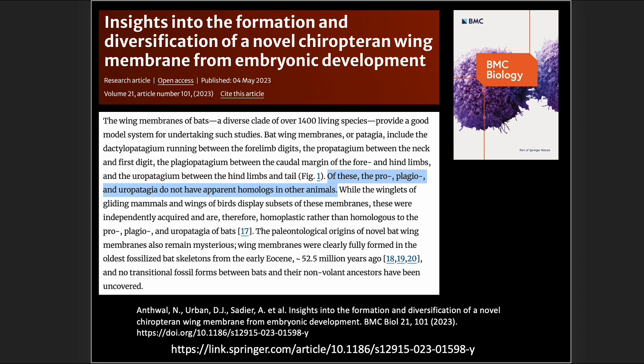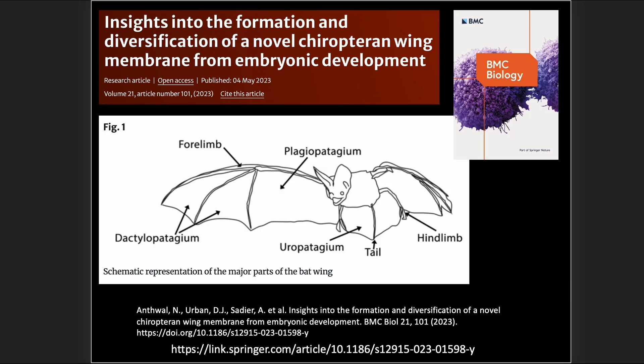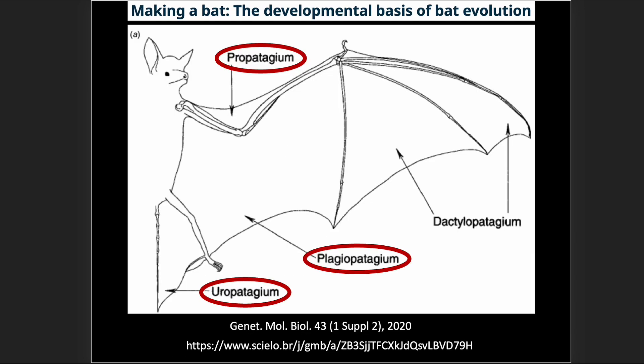Common descent isn't going to help us here, and neither will the fossil record. 'The paleontological origins of novel bat wing membranes also remain mysterious. Wing membranes were clearly fully formed in the oldest fossilized bat skeletons from the early Eocene, about 52.5 million years ago.' These three membranes that are circled do not have homologous membranes in other species — they are unique and novel to the bat.